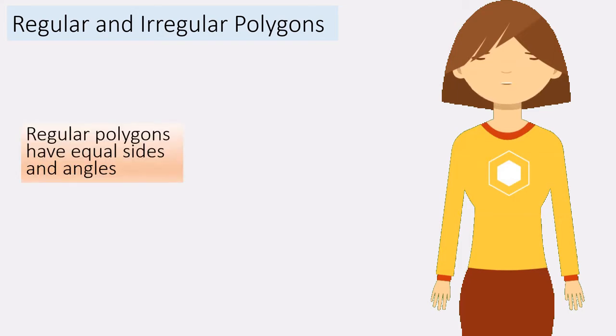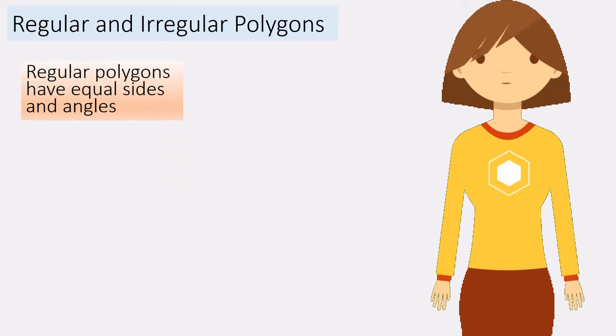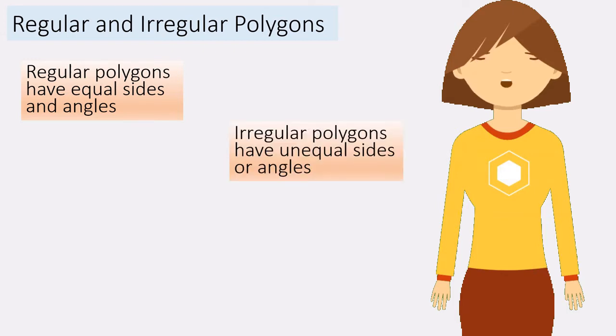Regular polygons have equal sides and angles, and irregular polygons have unequal sides or angles.